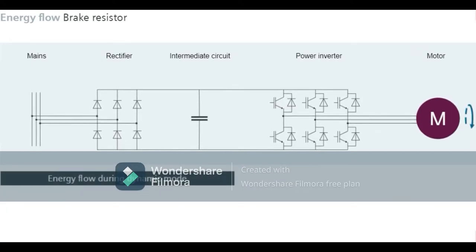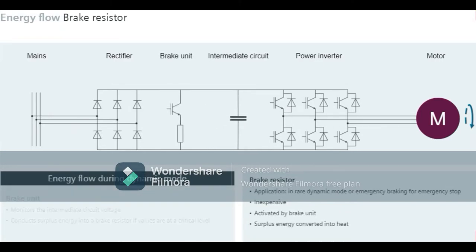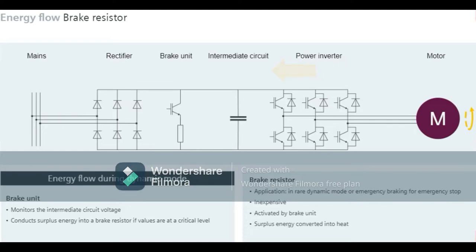If dynamic operation does not occur often, or the drive only needs to be braked suddenly for an emergency stop, using a brake resistor is an inexpensive solution. The brake unit activates a brake resistor which converts surplus energy into heat. The brake unit is essentially a switch which monitors the intermediate circuit voltage. If the voltage increases to a critical level due to dynamic energy flow, the switch closes and channels the surplus energy into a brake resistor.